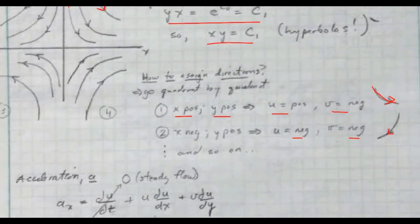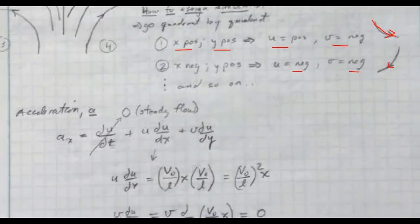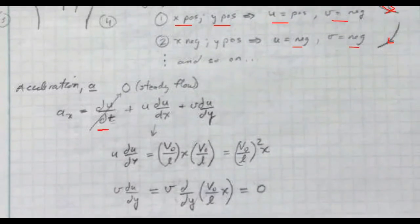So let's look at the acceleration now. So for steady flow, let's first say for acceleration, we have the local acceleration and the convective acceleration here in two dimensions. So we've got the u term and the v term. Now because it's steady flow, the derivative with respect to time becomes zero.